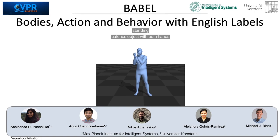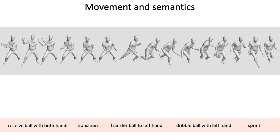We introduce Babel, a dataset of bodies, action and behavior with English labels.